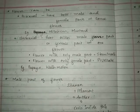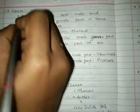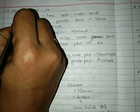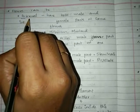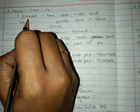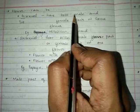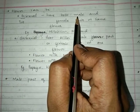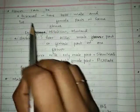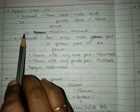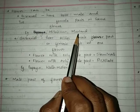A flower can be a bisexual flower or a unisexual flower. A bisexual flower has both male and female parts in a single flower. Examples of bisexual flowers are hibiscus and mustard.